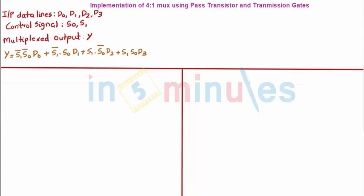Once I have this, I have written the expression for a 4-to-1 mux, which is y equal to S1̄·S0̄·D0 plus so on and so forth.